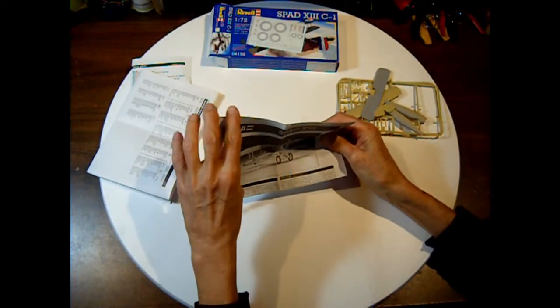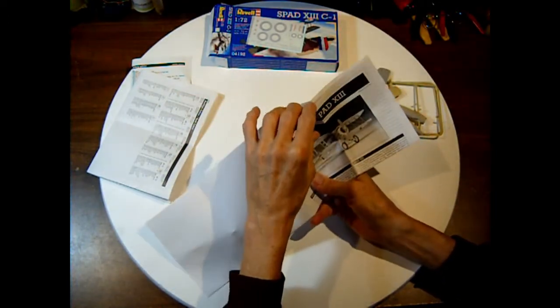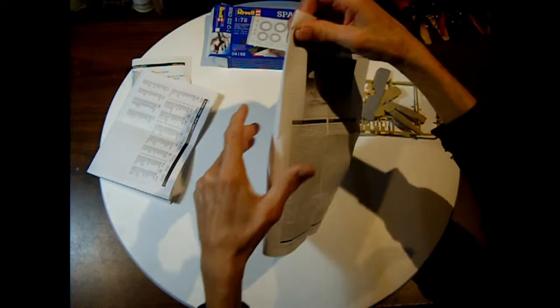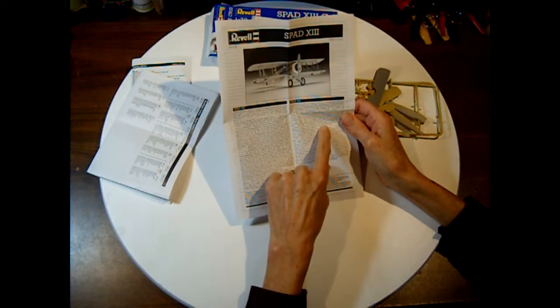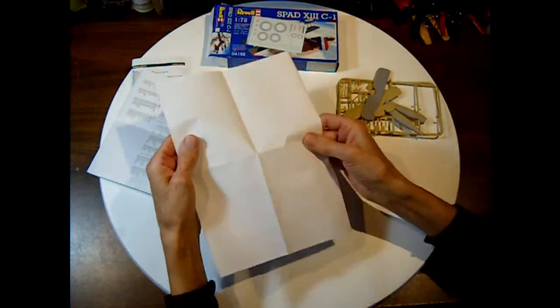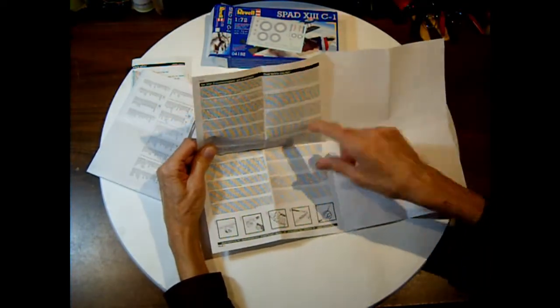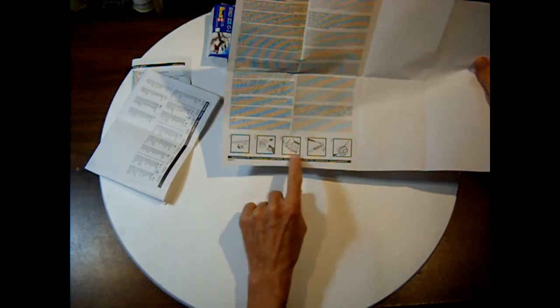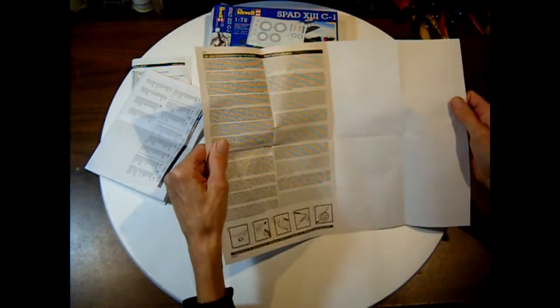Here's the basic information sheet. The way they fold these is weird. So this is your history and stuff like that. Two different languages here. And then the back is blank. And then you open it up on the inside and it's just more information, read before you start. Basic suggestions on how to take the parts off the sprue and how to paint them and all that. So that's about all there is to this one.